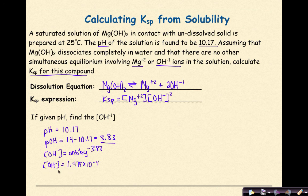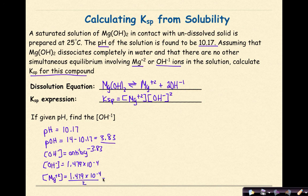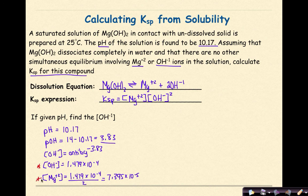Since the hydroxide ion concentration is known and the ratio of Mg²⁺ to OH⁻ is 1:2, the magnesium ion concentration is one half of the hydroxide concentration. Taking 1.479 times 10 to the negative 4 and dividing by 2 gives a magnesium ion concentration of 7.395 times 10 to the negative 5 M.